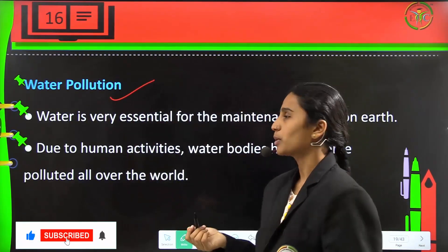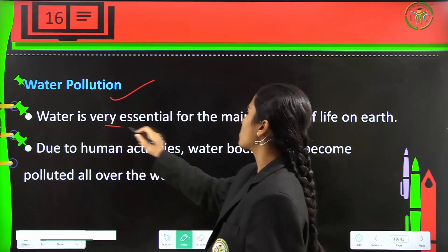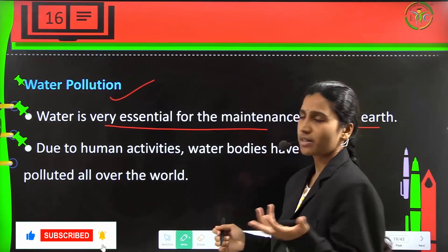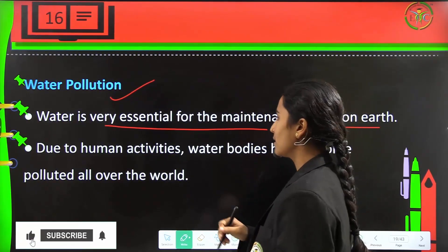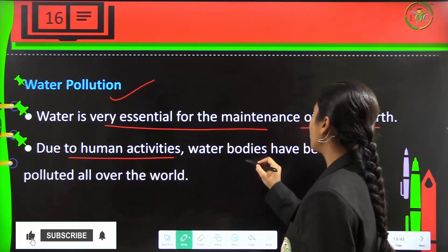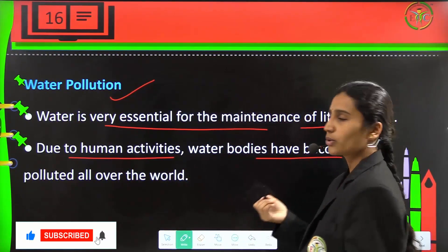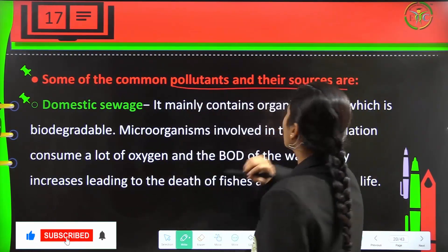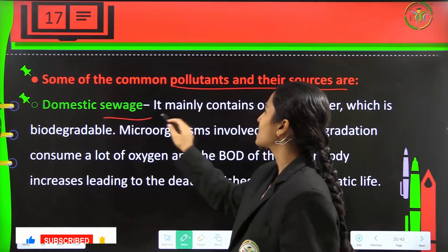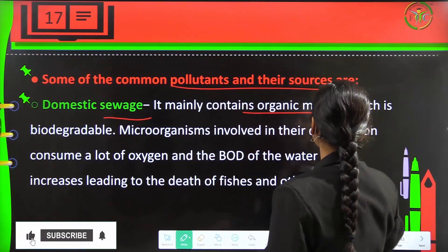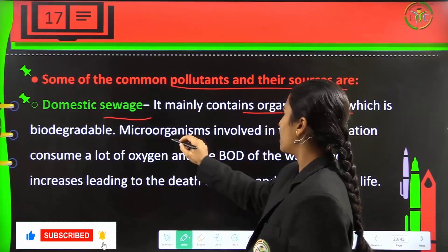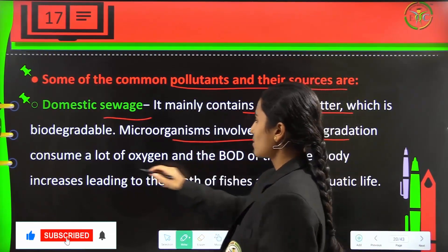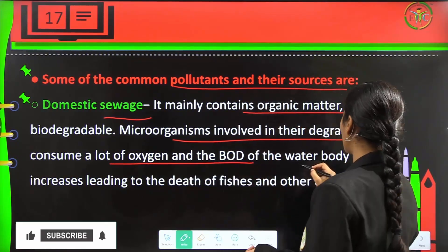Next, an important pollution type is water pollution. Water is very much essential for the maintenance of life on earth. Due to human activities, water bodies have become polluted all over the world. Some common pollutants and sources include domestic sewage, which mainly consists of organic matter that is biodegradable. Microorganisms involved in its degradation consume a lot of oxygen, increasing the BOD of the water.